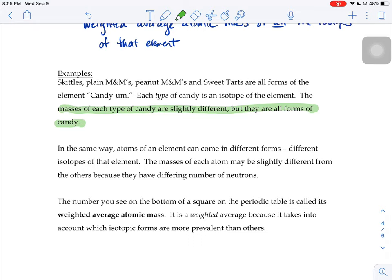As a result, when you get, if you had a periodic table square for candium, it depends on your sample of candy, of what number goes at the bottom of that square. Does your bag of candy, is it mostly made up of peanut M&Ms? Or is it mostly made up of sweet tarts? Which candy is the most prevalent? And then we would skew that weighted average in whatever form of candy, whatever isotope of candy is the most abundant.